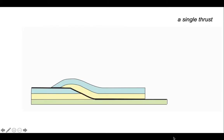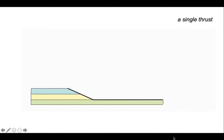Let's deal with a single thrust. Here's the standard view in cross section, where we have a thrust running along a flat, climbing a ramp and moving onto an upper flat. As a consequence, we generate an anticline in the hanging wall. Let's strip off that hanging wall to reveal the foot wall ramp and reveal this in three dimensions.